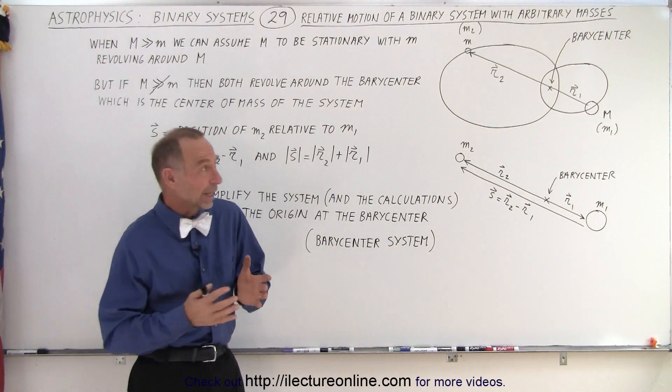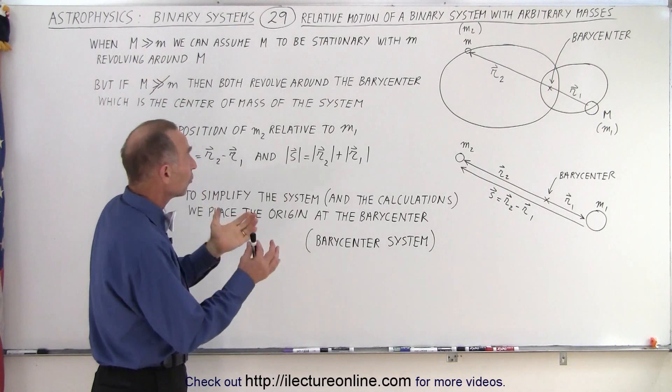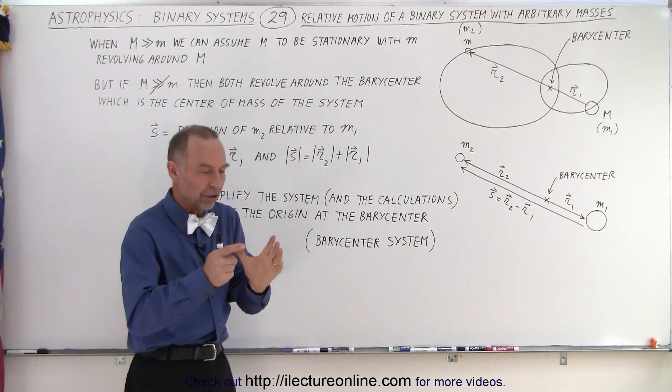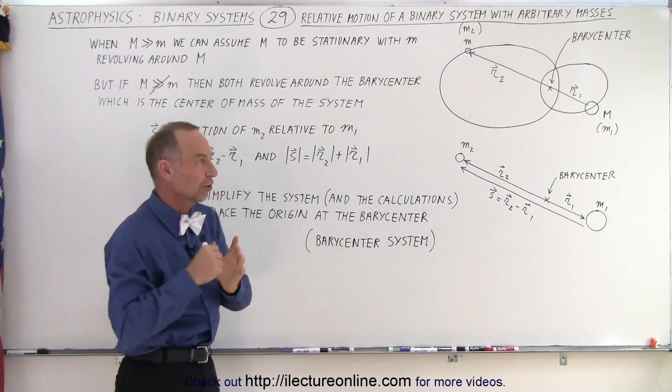So if we assume that the mass is much greater, right here in this condition, then we can assume that the large mass is stationary and the small mass, the planet, goes around that stationary star or stationary sun.